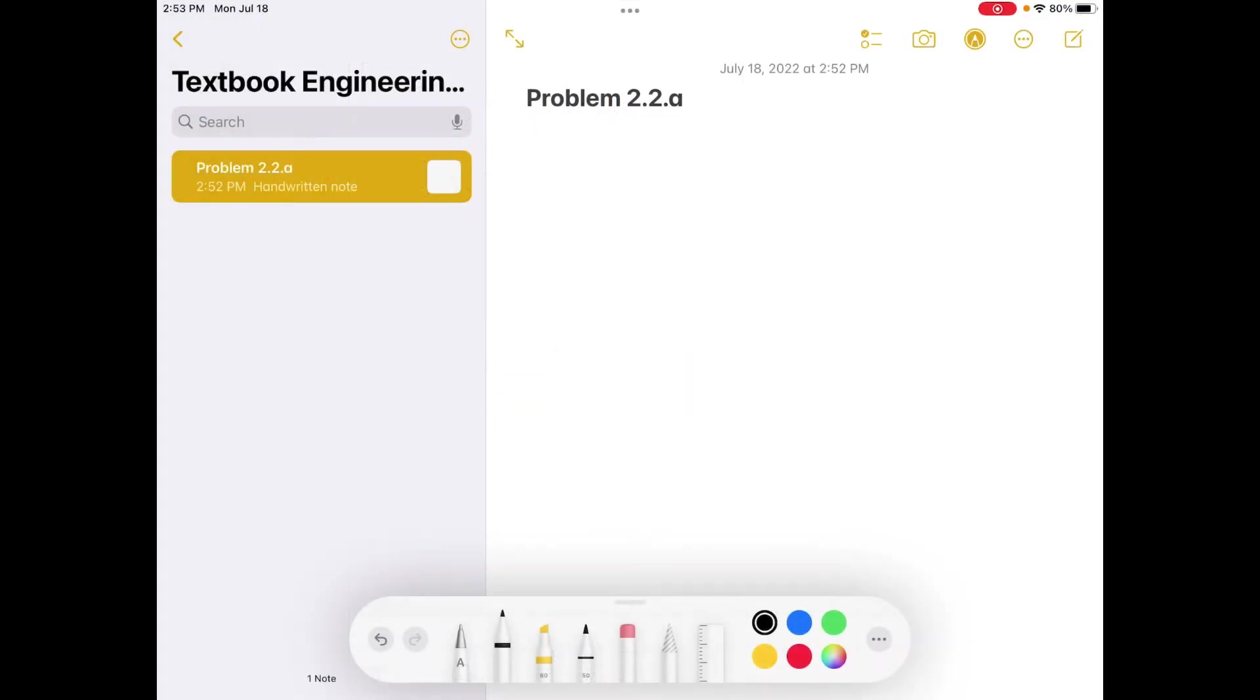We are continuing our work on the elementary principles of chemical processes book, doing the next problem here, problem 2.2. Very similar to episode one, so I won't explain as much in this one, but I'll point out a couple new things as we come along. If you're feeling a little lost, you can go back to episode one.